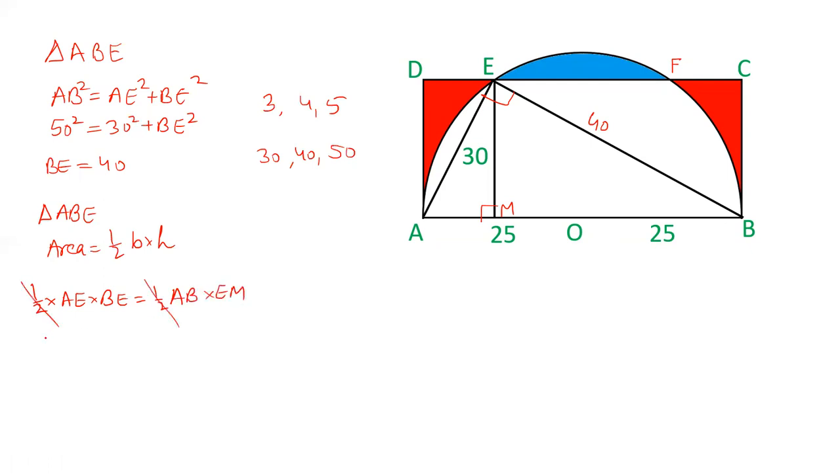Half cancels out. We have the value of AE which is 30 and this is 40. We also know the value of AB which is 50, and EM we have to calculate. So the length of EM will be 30 × 40 ÷ 50, and this 50 cancelled out by 30. So EM is 24. The length of EM is 24.